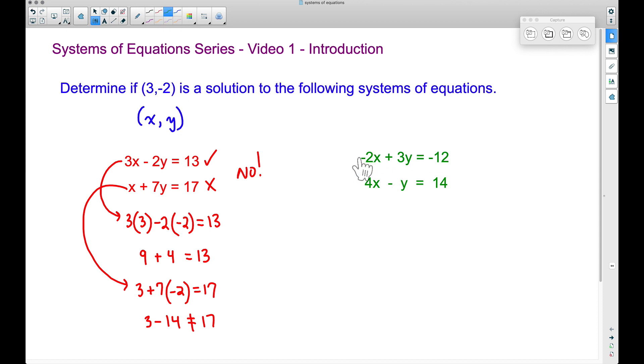Now let's take that same concept and let's come over here and see if this one works. Negative two times x, well that's going to be negative two times that x value of three. So negative two times three, plus three times y. So that's going to be plus three times our y value of negative two. And let's see if this gives us negative 12.